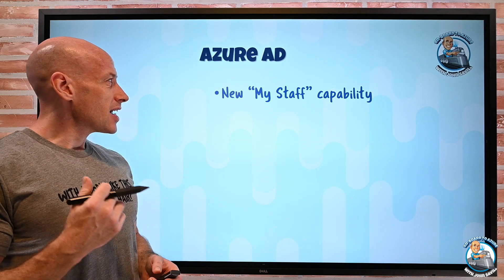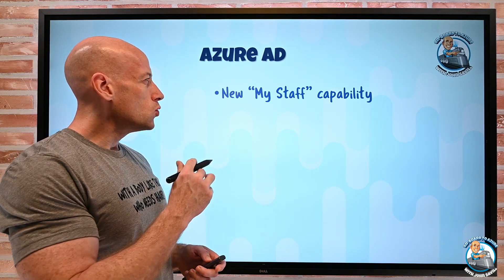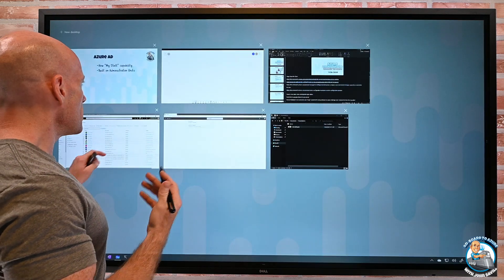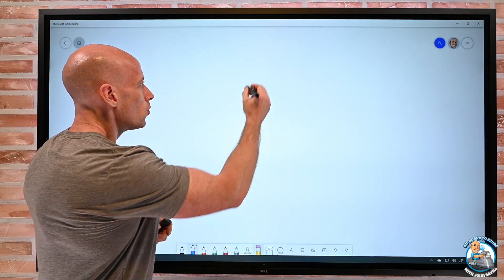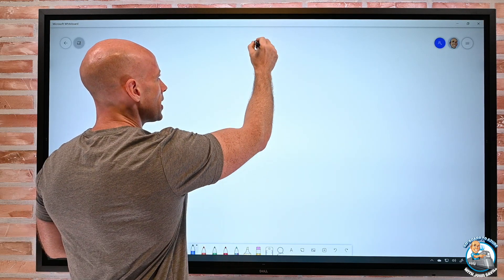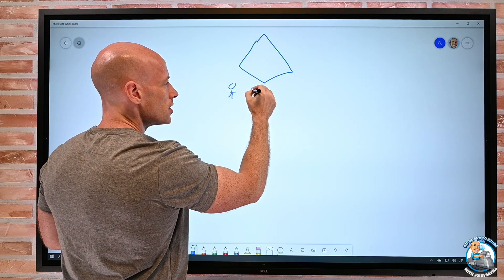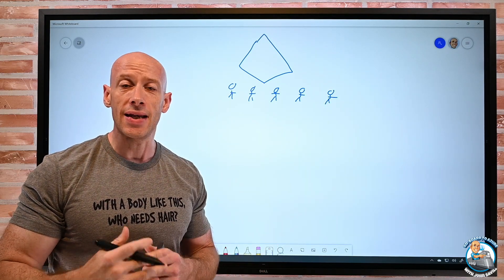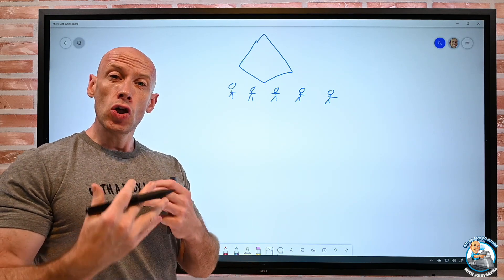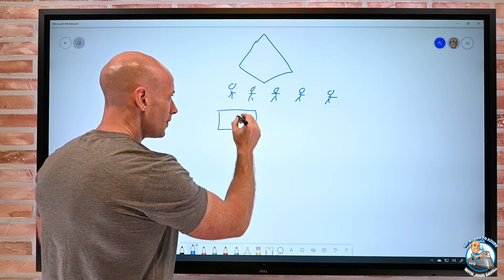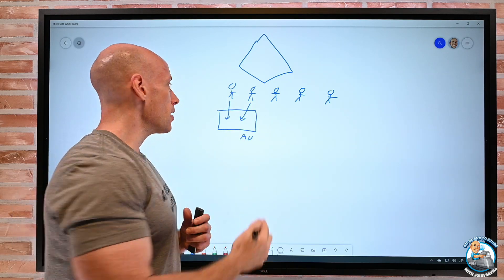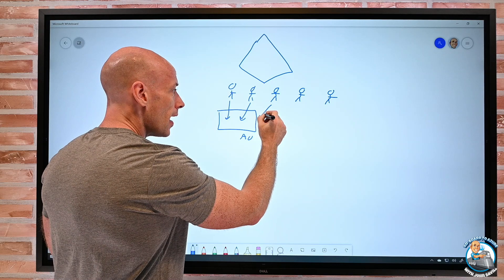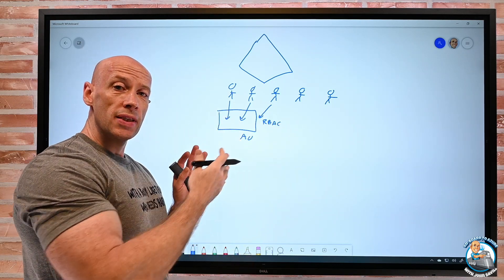So new capabilities. Azure AD has actually added a fairly interesting capability around this new My Staff. So this is actually built on administrative units. If you think about ordinarily with Azure AD, we have this Azure AD object and I can have lots of users in that Azure AD, but there is no structure. There's no organizational units like we have in Active Directory. So what administrative units do is I can now create this administrative unit.